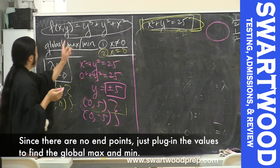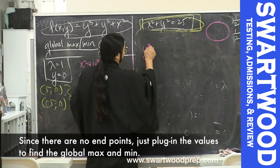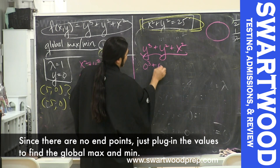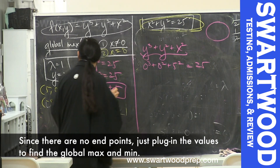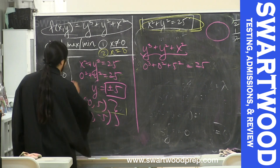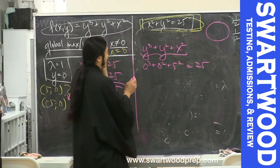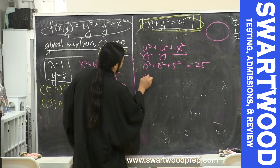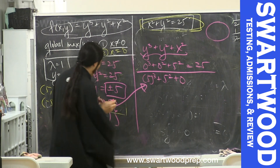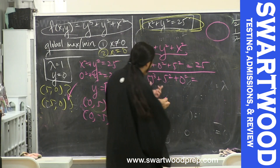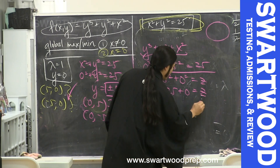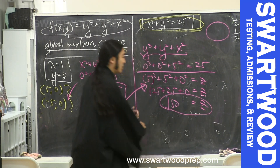Evaluating f(x, y) = y cubed + y squared + x squared: at (5, 0): 0 cubed + 0 squared + 5 squared = 25. At (−5, 0): same result, 25. At (0, 5): 5 cubed + 5 squared + 0 = 125 + 25 = 150.